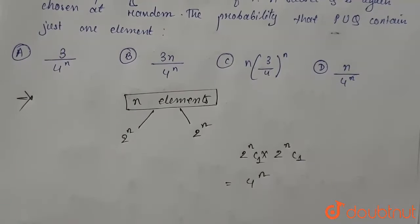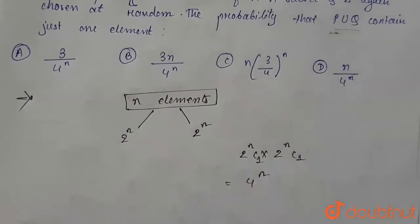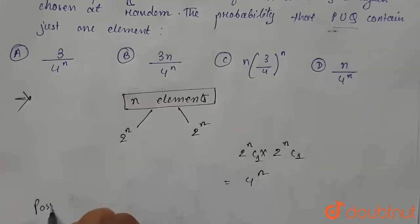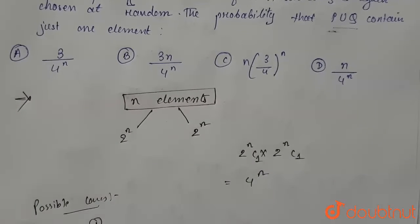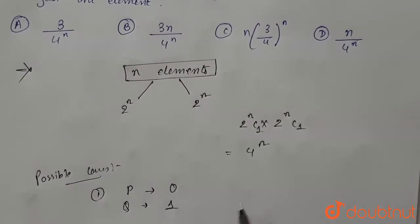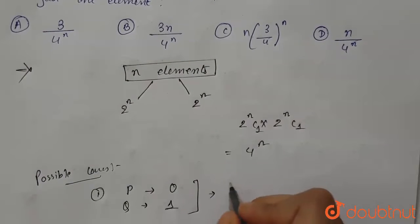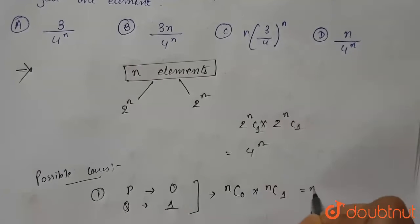Now we need only one element in P and Q. Possible number of cases is for one element when P has zero elements and Q has one element. From here we can get n C0 into n C1 which is equal to n.